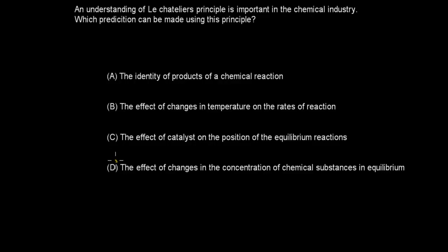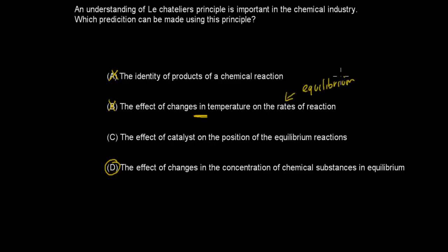Welcome back. The correct answer is D. A is wrong because Le Chatelier's principle doesn't deal with identifying products. B is incorrect because it mentions rates of reaction without mentioning equilibrium — Le Chatelier's principle only deals with equilibrium, not general equations. C is incorrect because a catalyst speeds up the reaction but won't change the position of equilibrium. D is correct: changing the concentrations of chemical substances will change the equilibrium position.